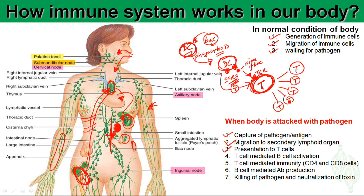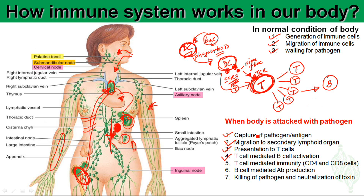After clonal selection, the T cells move to the B cell zone of the secondary lymph node — all of this happening within the secondary lymphoid organ, such as the lymph node, spleen, or Peyer's patches. There, the T cells induce activation of B cells. When B cells are activated, they produce antibodies that are specific to the bacterial pieces originally presented by the dendritic cell.